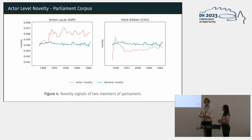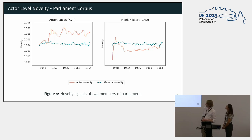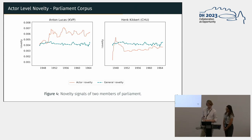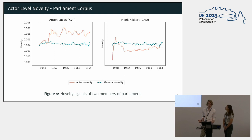For parliament, two different actors are shown: one on the left with quite high novelty compared to the general trend (the blue line) — that is Anton Lucas, a financial specialist — and one to the right generally below the general novelty trend. Both show considerable peaks. Interestingly, most persons operating above the general novelty line are not who you would expect: Anton Lucas is a very boring financial specialist, while the grand rhetoricians known in history do not appear as particularly novel.